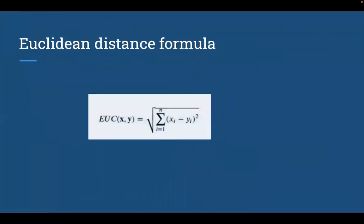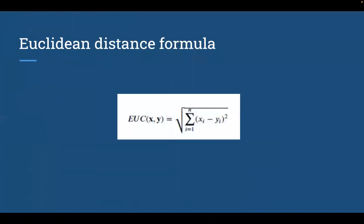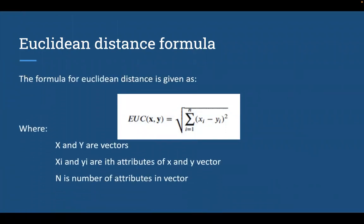Coming to the formula of Euclidean distance, the Euclidean formula for two vectors x and y is given as square root of summation 1 to n, x i minus y i whole square. In other words, Euclidean distance between two vectors x and y is the square root of sum of square differences between corresponding attributes of these two vectors. X and y are two vectors with n number of attributes, and x i and y i are the ith attributes of x and y vectors respectively.